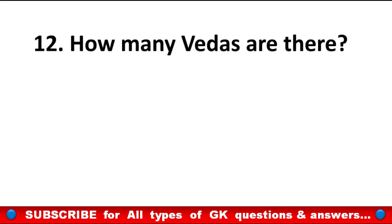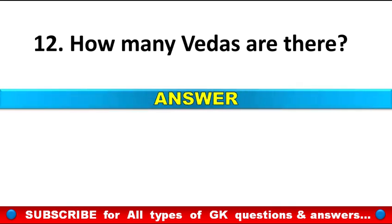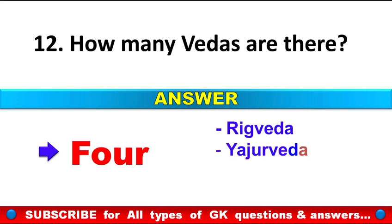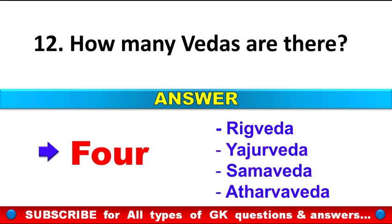How many Vedas are there? Answer: 4. Namely: Rig Veda, Yajur Veda, Sam Veda, and Atharva Veda.